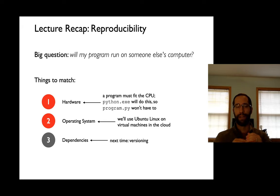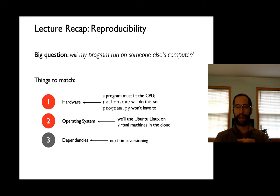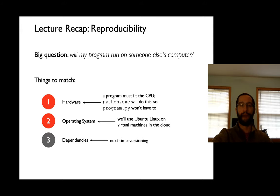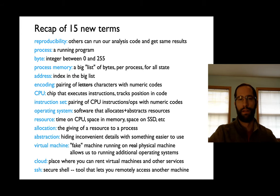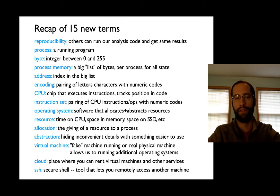So those were the first two big pieces of reproducibility — will my program run on somebody else's computer? We have a Python interpreter to help with the hardware, and the approach we're taking in this class is having everybody use the same operating system, Ubuntu Linux, on virtual machines. Next time we'll talk a little bit about package dependencies. Here's a recap of all the terms we've learned.